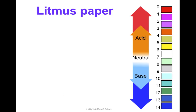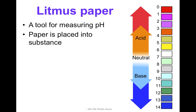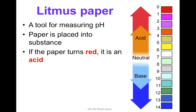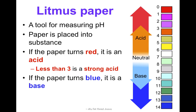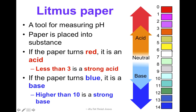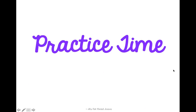Last but not least, litmus paper. This is something we can use to measure pH. Some of you may have used probes before, but the paper is pretty easy. You just place it into a substance and let it dry. If it turns more red, it's more acidic — less than 3 is considered a strong acid. If it turns more bluish colors, it's basic, and higher than 10 would be considered a strong base. You basically dip it in and then hold it up to the color scale to see what number it is on the pH scale.